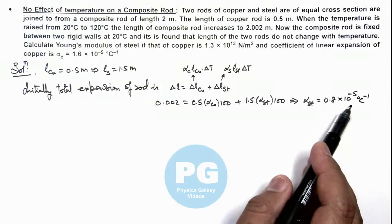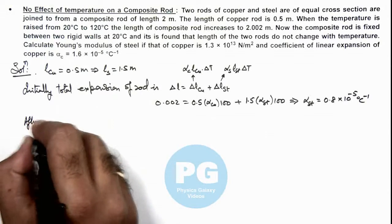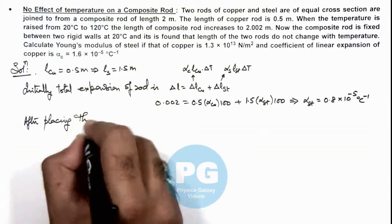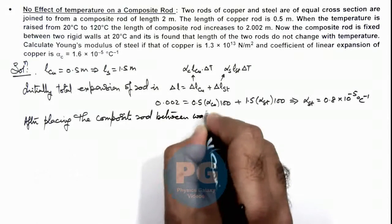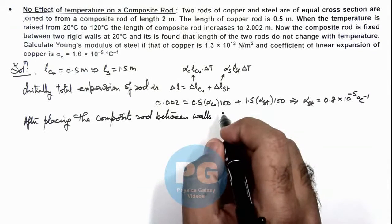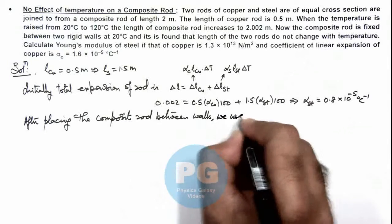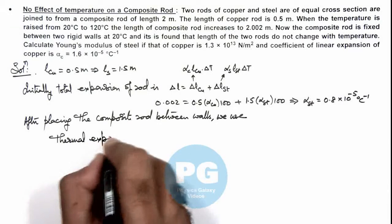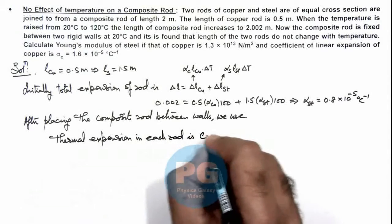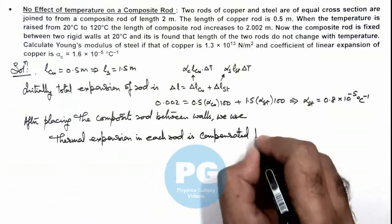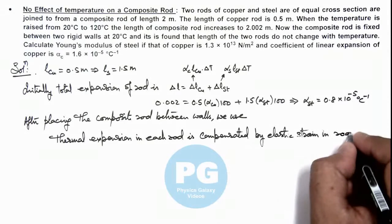We have obtained the coefficient of linear expansion of steel, and that of copper was already given. Now, after placing the composite rod between the walls, since the lengths of the rods do not change with temperature, the thermal expansion in each rod is compensated by the elastic strain, or elastic compression, in that particular rod.